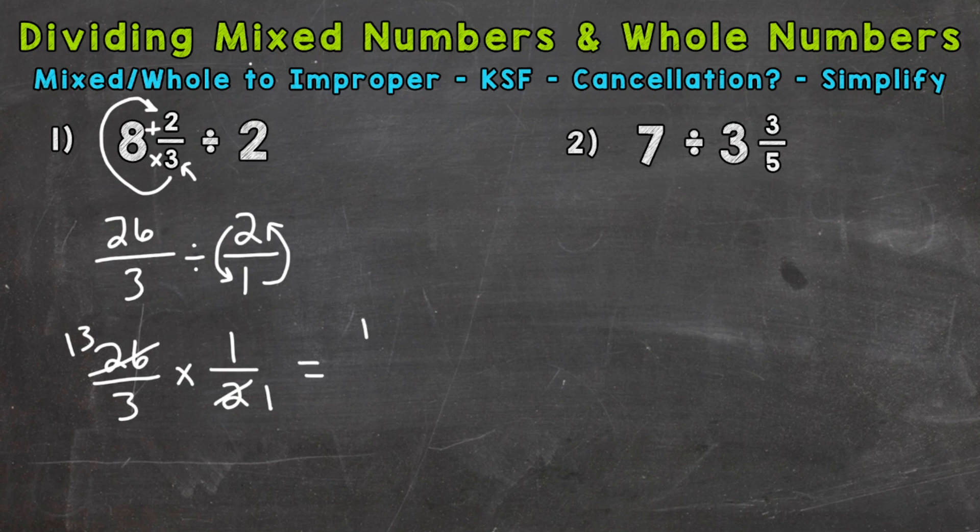So we have 13 times 1. We're ready to multiply straight across. So 13 times 1 is 13, and 3 times 1 is 3. So we end up with 13 over 3, which is an improper fraction. That is our answer, but we don't want to leave it improper. We want to change it to a mixed number. So we do that by doing our numerator, 13, divided by our denominator, 3. So let's write it out to better understand what we're doing here. So 13 divided by 3. How many whole groups of 3 out of 13?